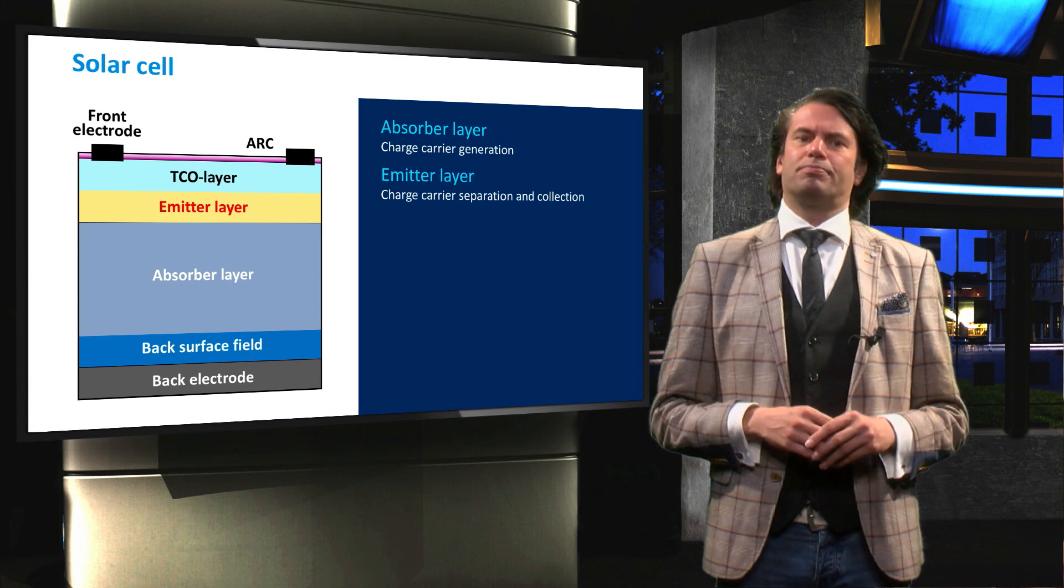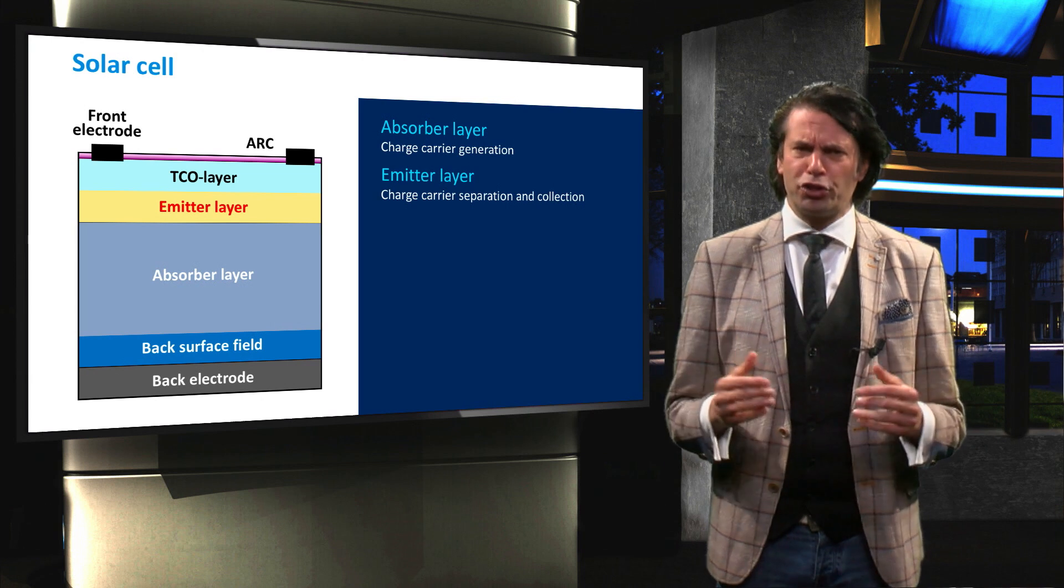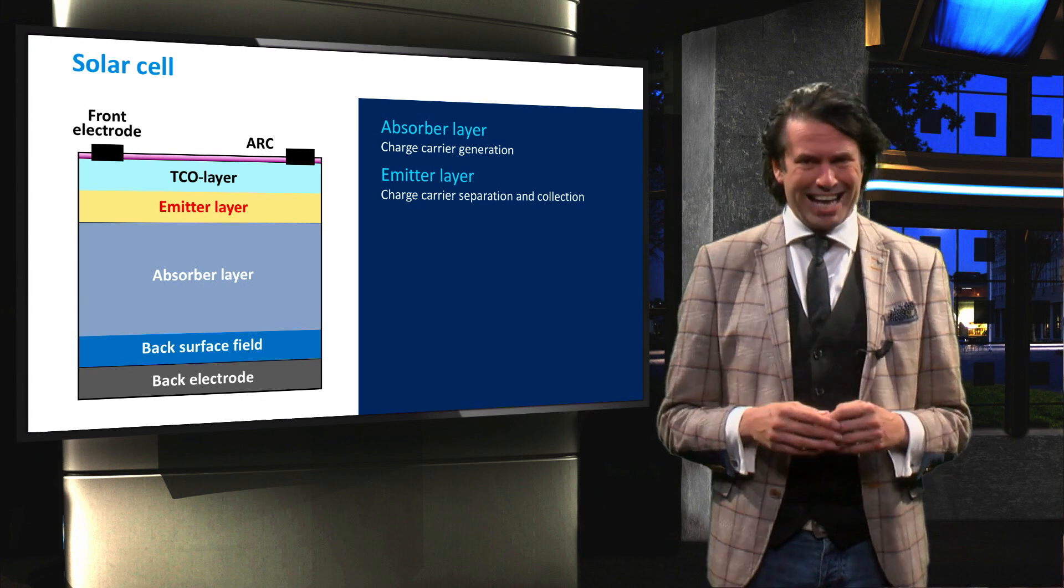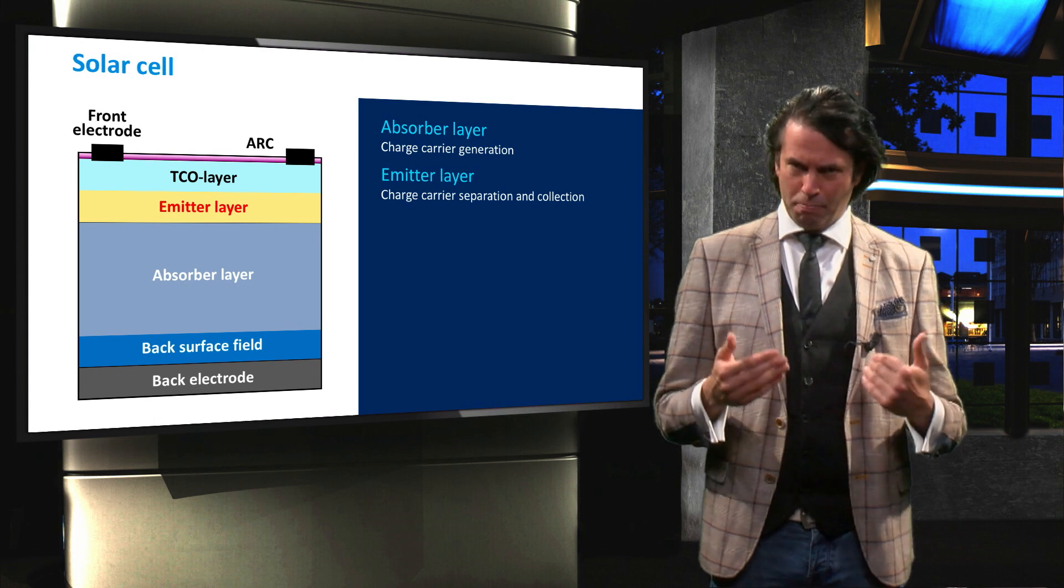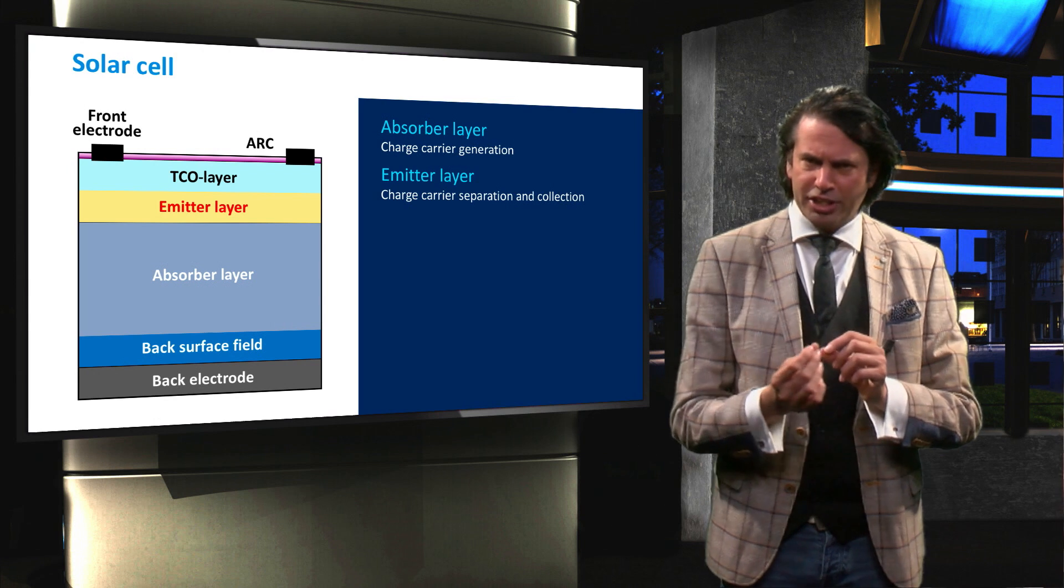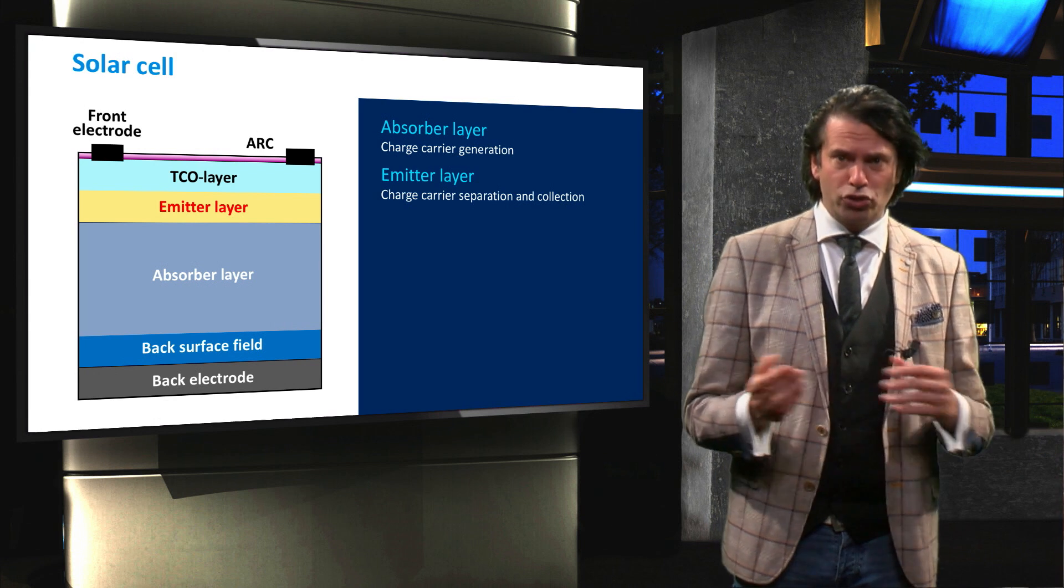Next is the emitter layer. The emitter layer is crucial for the charge carrier separation and collection. The emitter layer functions as a selective membrane that allows minority charge carriers, in this case electrons, to move through.